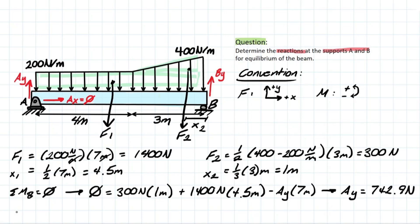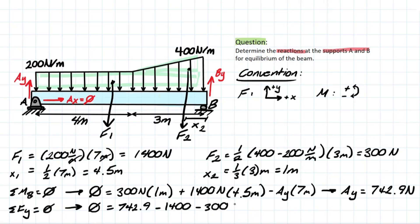Then we take the summation of forces in the Y direction to find By. We have Ay = 742.9 N. F1 is downwards, so it's negative. F2 is downwards, so it's negative. Solving for By, we get 957.1 N. Those are your final answers.